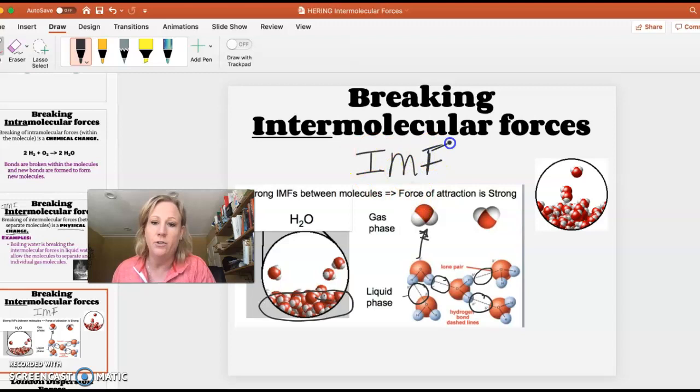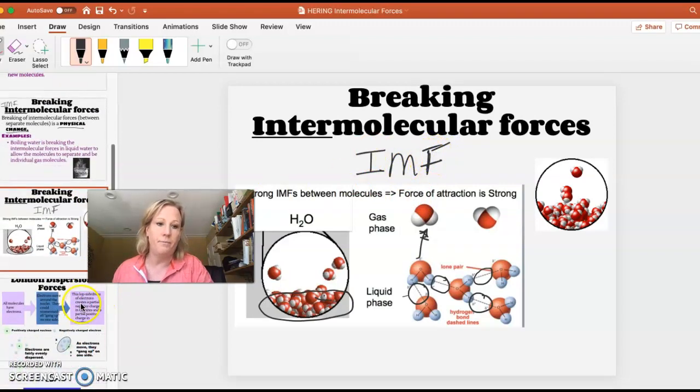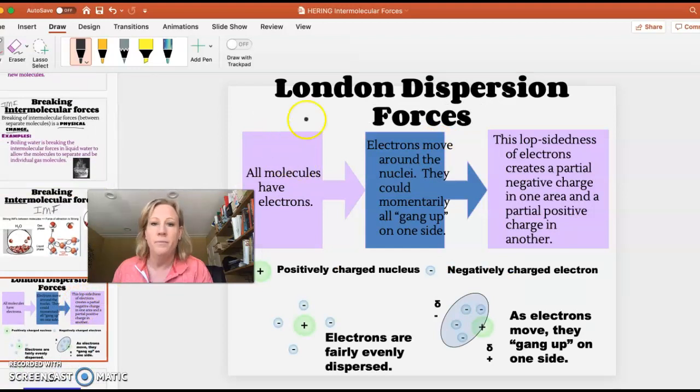The IMFs are going to be broken with physical change like a phase change. Let's talk about there's three types of IMFs. One of them is London dispersion, another is dipole-dipole, and then the third is hydrogen bonding.